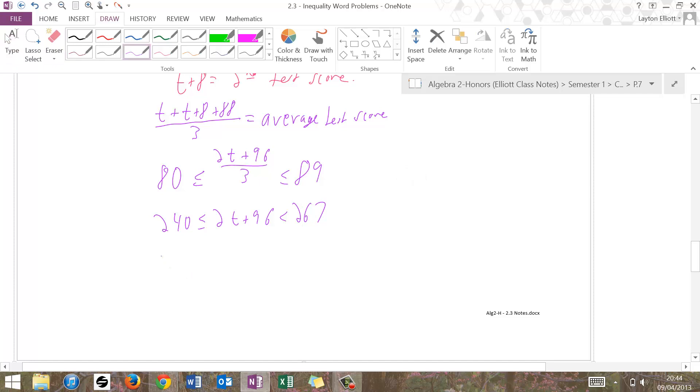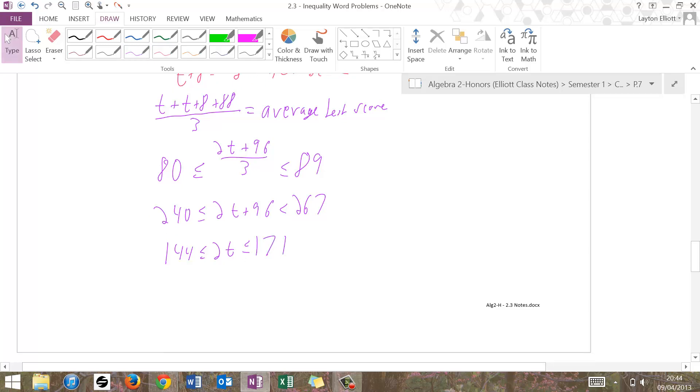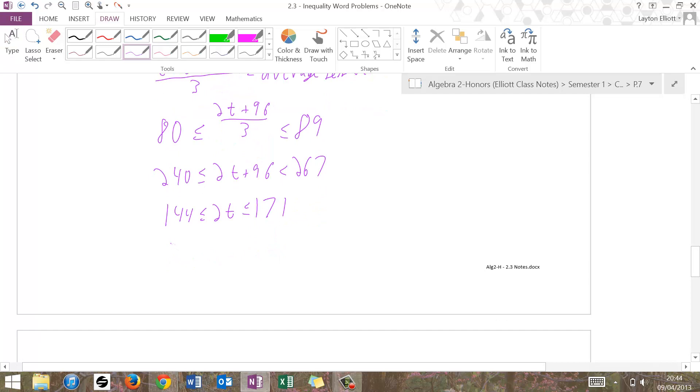We get 144 less than or equal to 2T, which is less than or equal to, that'd be 167 plus 4, 171. Divide by 2, and I get 72 less than or equal to T, which is less than or equal to, we can put decimal around this, 85, not round, that's exact, 85.5.